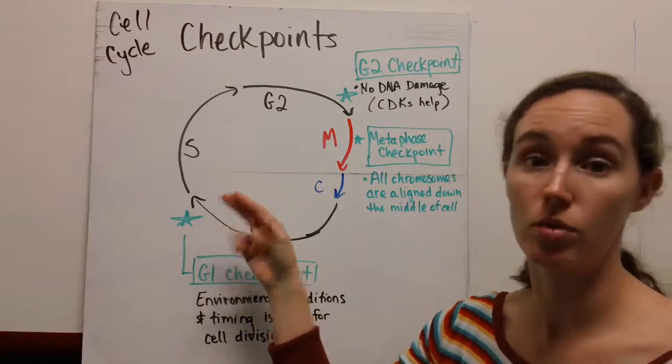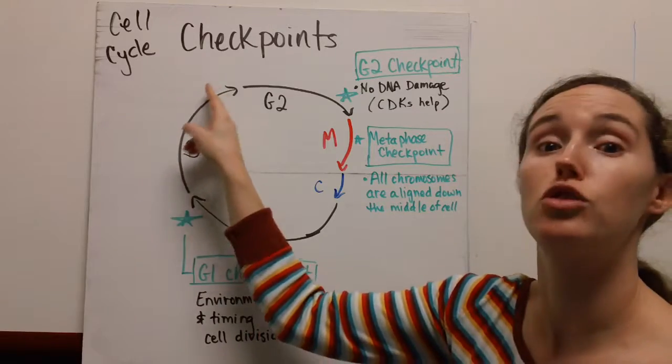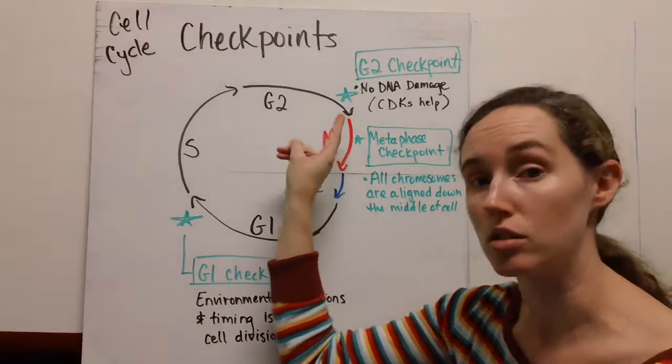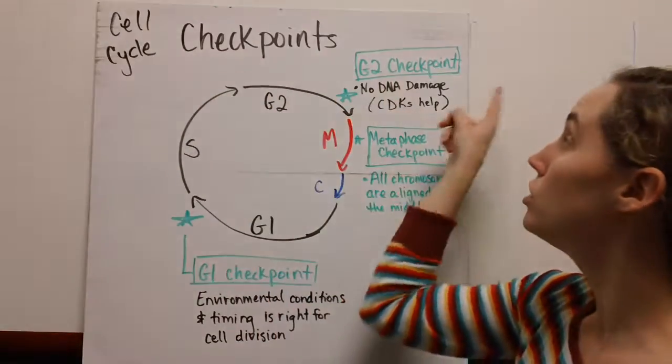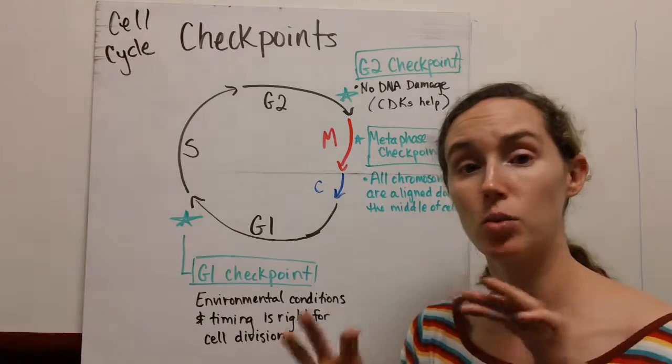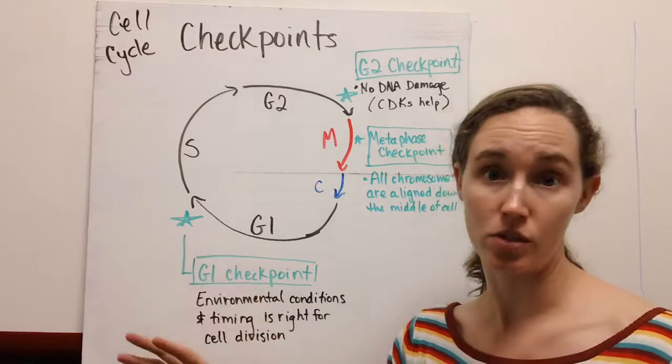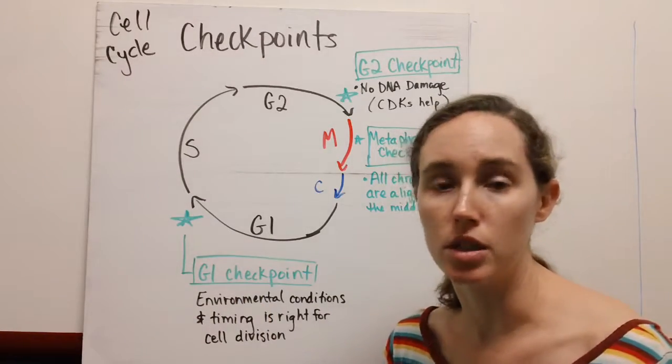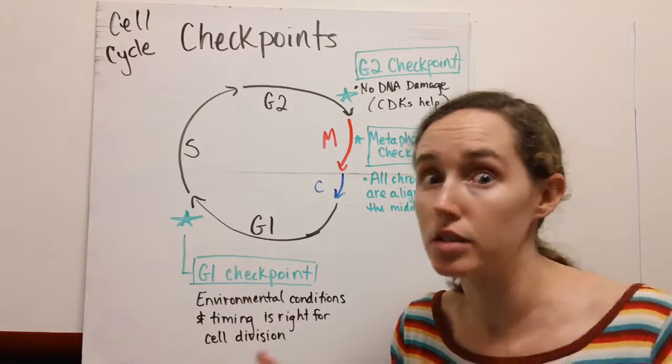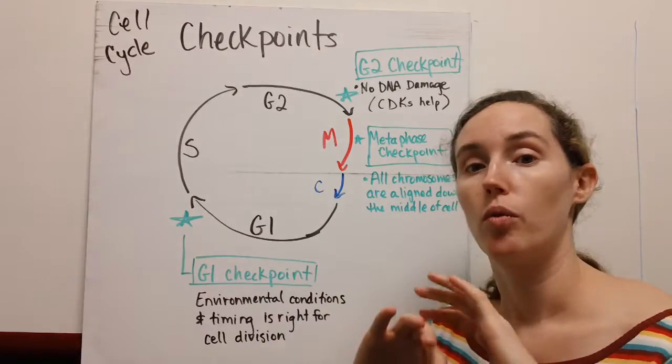It moves on into synthesis where our DNA is replicated, then into G2 where we hit our second checkpoint, the G2 checkpoint. This is when our cell goes through and makes sure that none of our DNA is damaged, because what's the point in making new cells if the DNA is messed up?